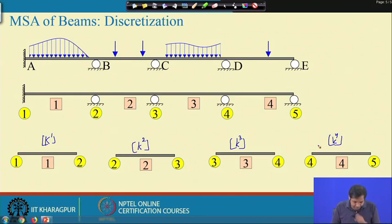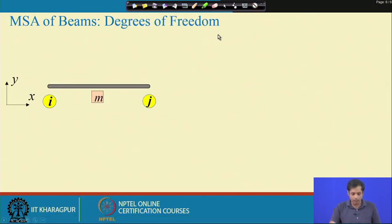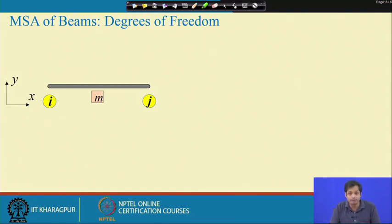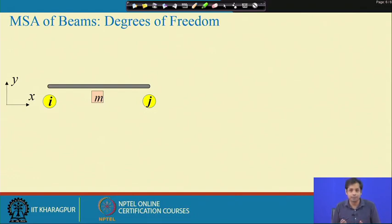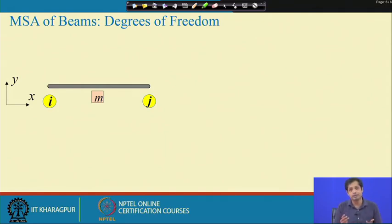Let us take any arbitrary member m connected between point i and point j. Before we see what the elements of the stiffness matrix are, it is important to define the degrees of freedom. In two dimensions, any point has 3 degrees of freedom: it can translate in two directions and rotate about the third axis. At node i we have 3 degrees of freedom and at node j we also have 3 degrees of freedom.